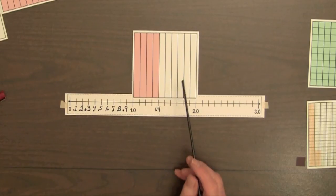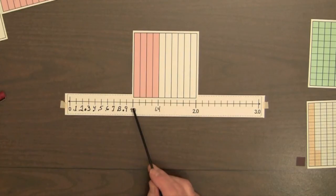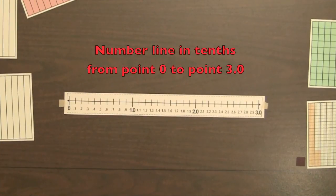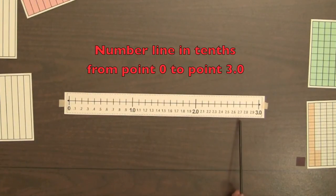More squares can be used as needed to get the mixed decimals for tenths from 1.0 to 2.0, and from 2.0 to 3.0. Here is a number line completed with mixed decimals in tenths from 0 to 3.0.